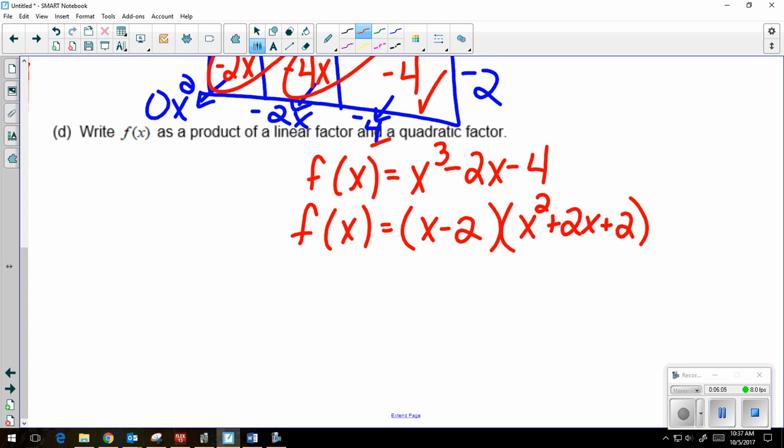So actually, part D we wouldn't have been able to do if we didn't divide in part C. We would have had to divide anyway. So this is written as a product of a linear factor and a quadratic factor.